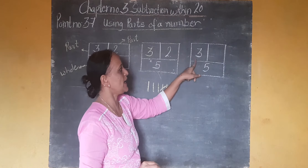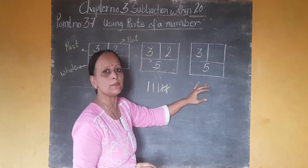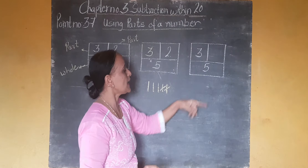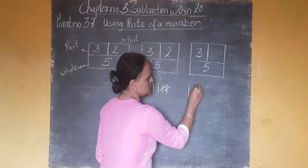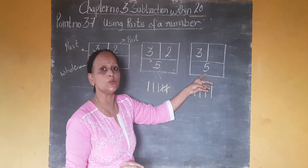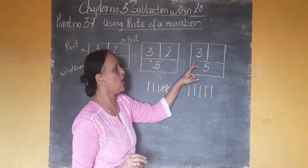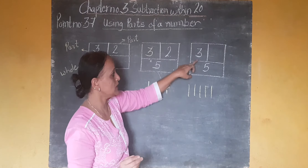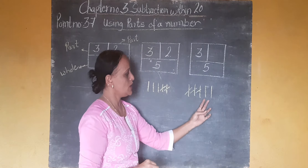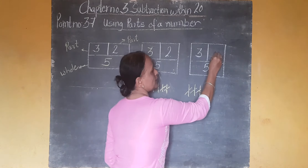Now this part: one part has 3 numbers given and another part is empty. What is the whole of this number? The whole is 5. Again I am going to draw 5 lines: 1, 2, 3, 4, 5. We have to do subtraction to get this part. From 5, how many lines do you have to cross? Cross 3 lines: 1, 2, and 3. How many lines are left? 2 lines. So the number here is 2.